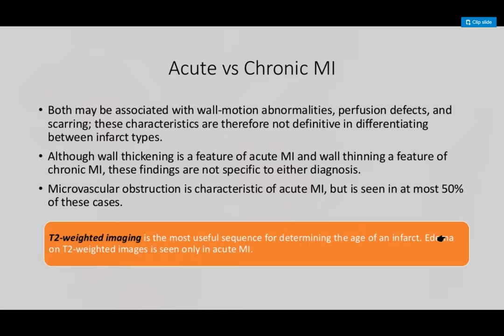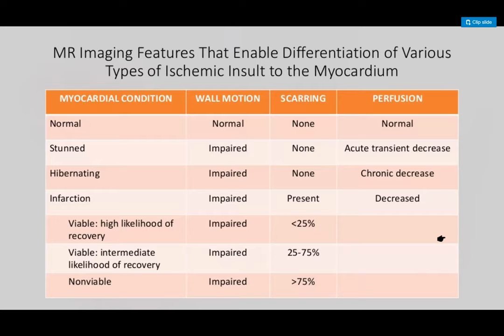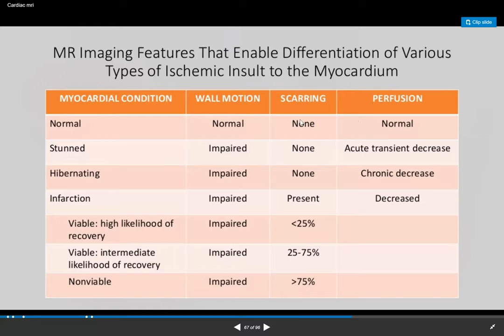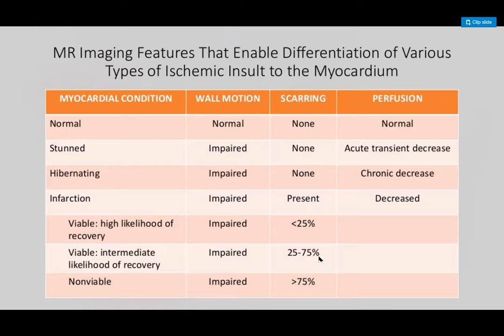Regarding microvascular obstruction — already discussed. Summarizing the viability categories: high likelihood of recovery with less than 25% LGE; intermediate with 25-75% LGE — can challenge with dobutamine or call it 20-60% chance; non-viable with more than 75% LGE.